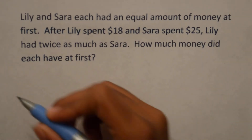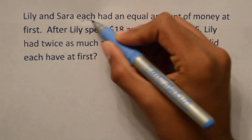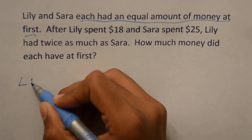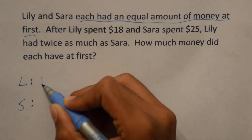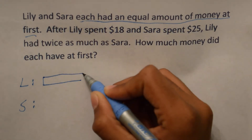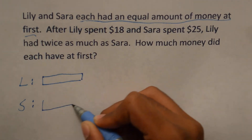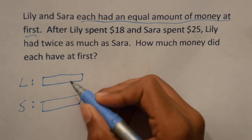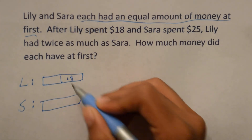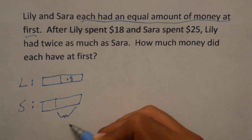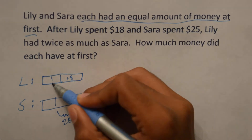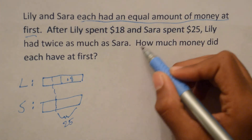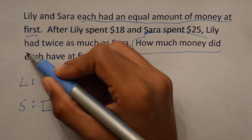So let's model the first part — that they each had an equal amount of money at first. And now we know that after Lily spent $18 and Sarah spent $25, Lily had twice as much as Sarah. The question is: how much money did they each have at first?